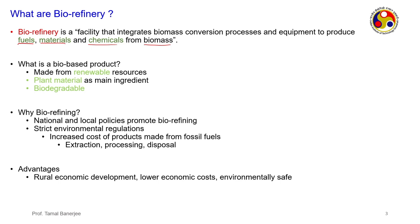Then there are chemicals. There are a lot of chemicals from biomass, similar to a refinery. We get platform chemicals such as furfural, glucose, HMF, levulinic acid — all different chemicals obtained from biomass from which you can further produce aromatics.